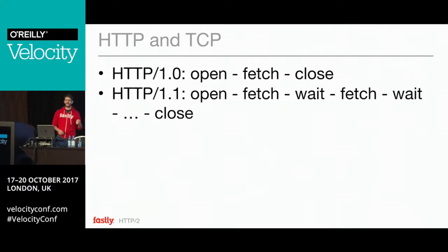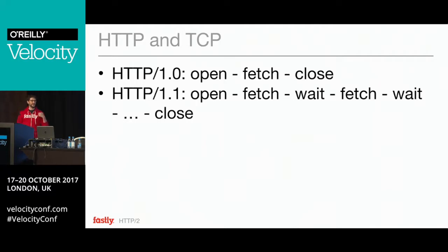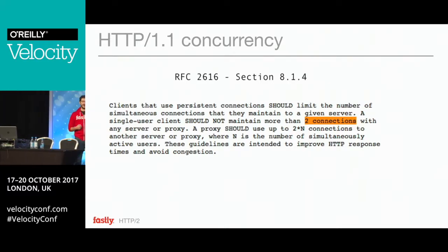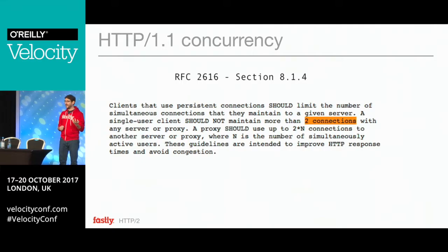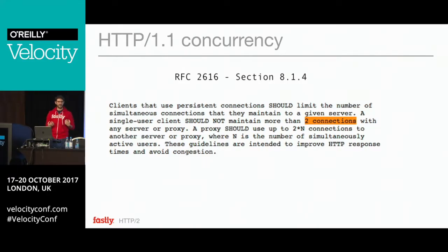HTTP uses TCP. The first version of HTTP used TCP in a very naive way — it would open a TCP connection, fetch a resource, download it, and then close the connection, adding a TLS handshake on top of that if using SSL. HTTP1.1 was a slight improvement: once the first resource was downloaded, you could start downloading another one on the same TCP connection. However, this doesn't allow fetching two objects at a time. The RFC already in 1999 recognized this and instructed clients to keep two open connections to the server.